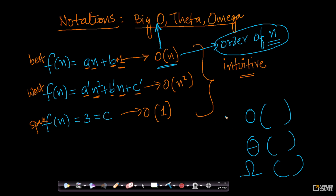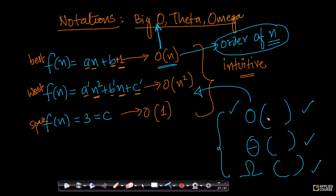There are three notations in time complexity and space complexity analysis. We will understand each of these. We will start with big O because we have already seen it in the previous video. Let us understand all three of these notations more rigorously and mathematically. First, we start with big O of n.